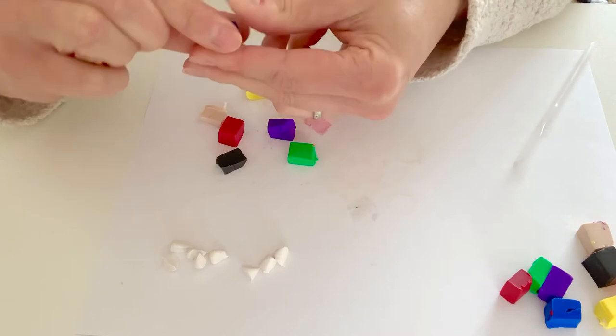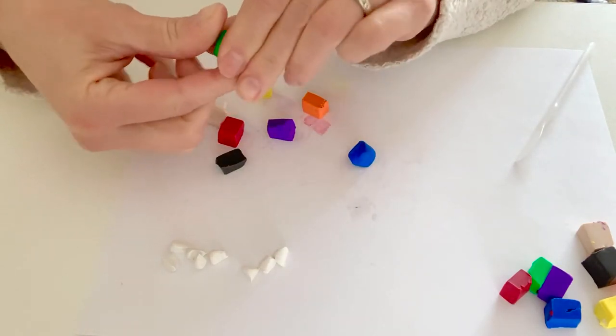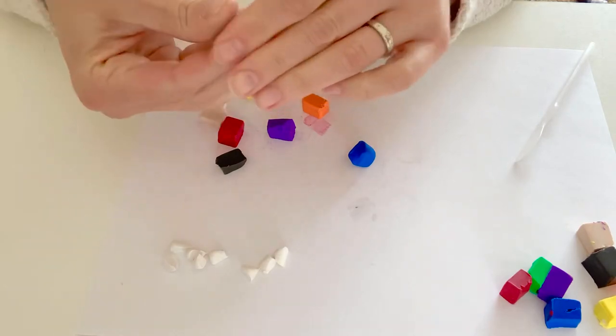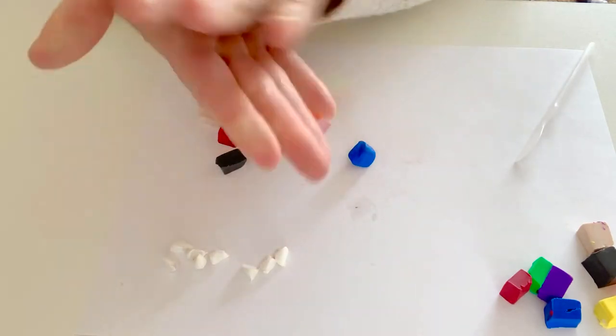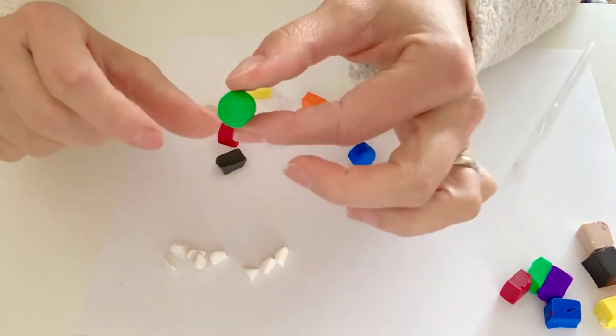So the first thing I'm going to do is do a little body for a monster. I think I'm going to start with green here. So I'm going to take my green and I'm going to roll it into a ball.